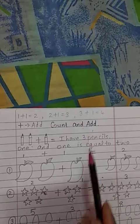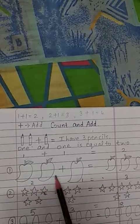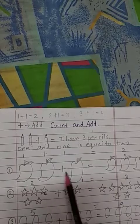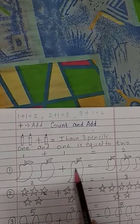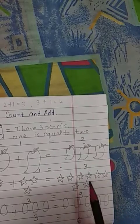Count and add. See here children. If 2 mangoes are there and 1 mango we add, so how many mangoes in all? 1, 2, 3. So what we will do is, we will draw here 3 mangoes.